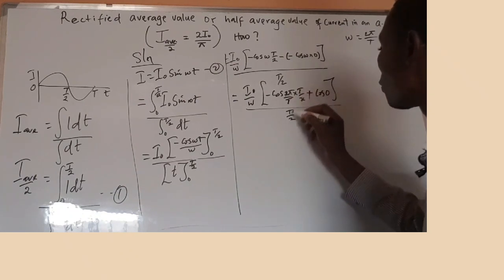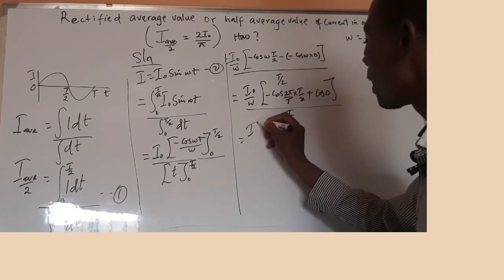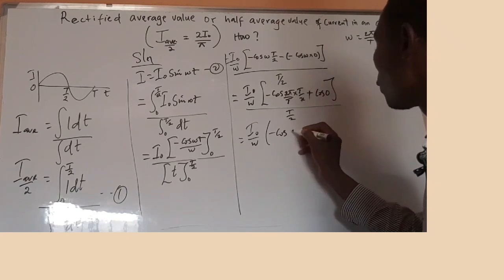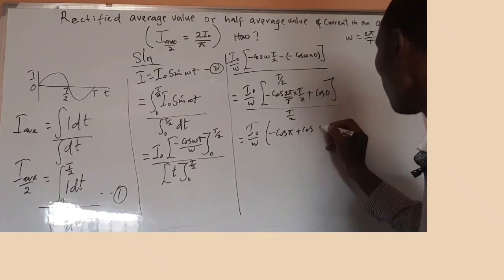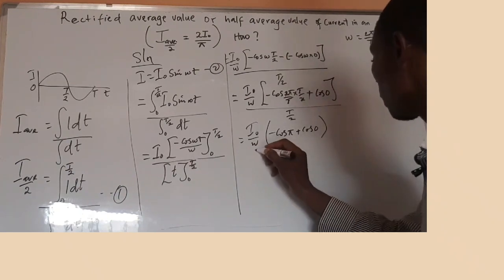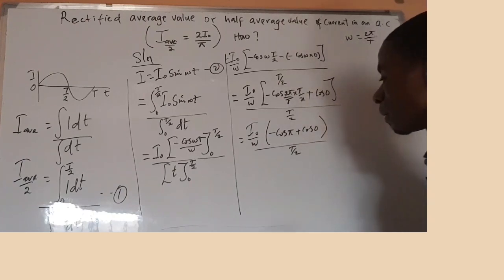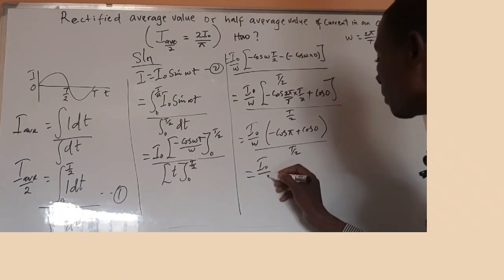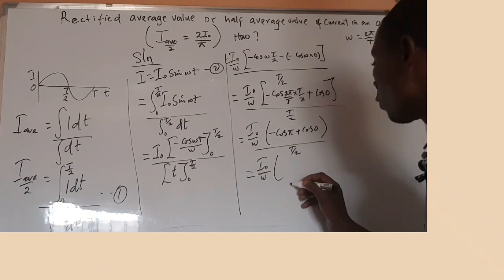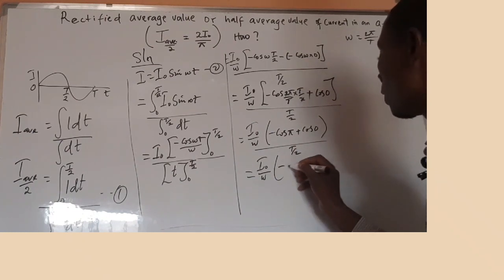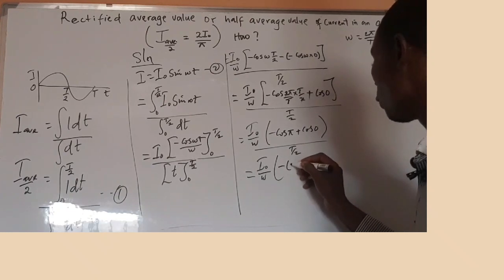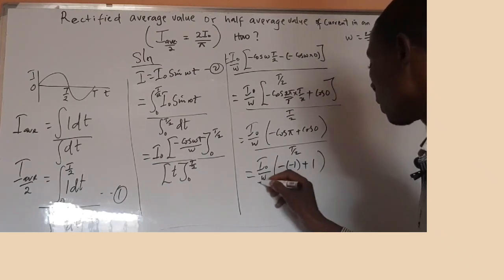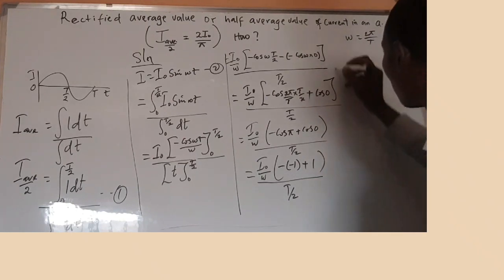Two will cancel two, T will cancel T. So we have I₀ over ω, then minus cos(π) plus cos(0), close bracket, all over T over two. Now cos(π) is the same thing as cos(180°), and cos(180°) is minus one. So we have minus times minus one, close bracket, plus cos(0) which equals one, close bracket, all over T over two.